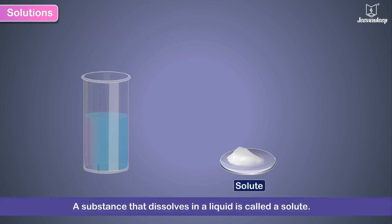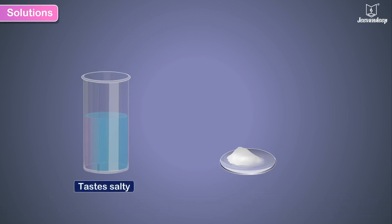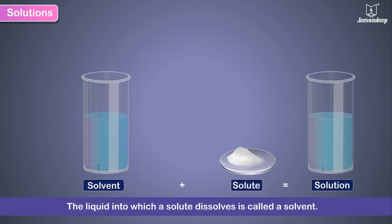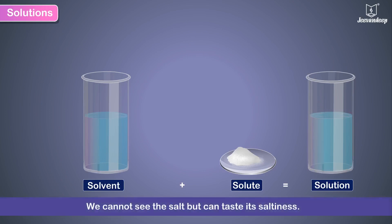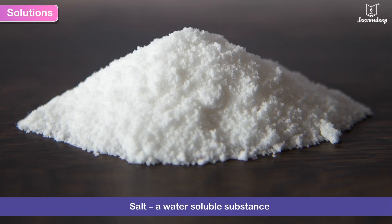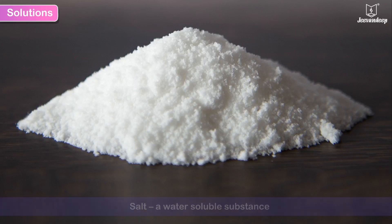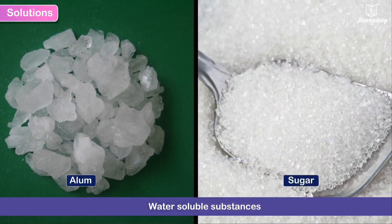We call a substance that dissolves in a liquid a solute. The water into which the salt has dissolved now tastes salty. The liquid into which a solute dissolves is called a solvent, and the liquid that we get as a result is called a solution. When we dissolve salt into water, we get a salt solution. We cannot see the salt but can taste its saltiness. We can thus say that salt is a water-soluble substance. Alum and sugar are some water-soluble substances.